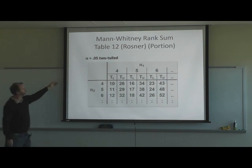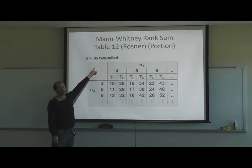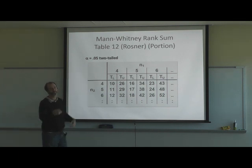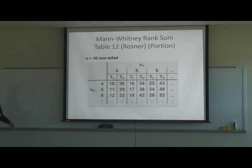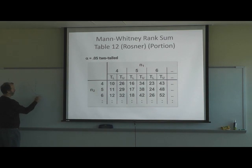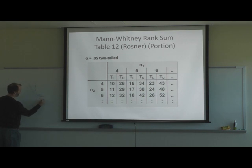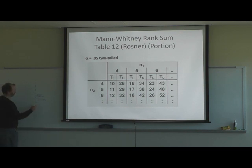This table shows alpha 0.05 on a two-tailed test. Do you understand the difference between a two-tailed and a single-tailed test? With a one-tailed test, you're looking to see if your values fall on one specific side. For a 0.10 significance level, 10% of the data falls in that one tail, meaning there's a 10% probability your data would be over there.